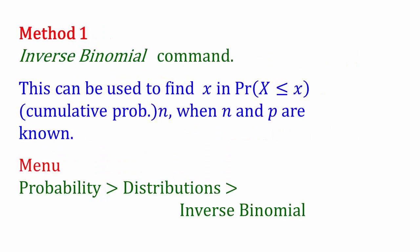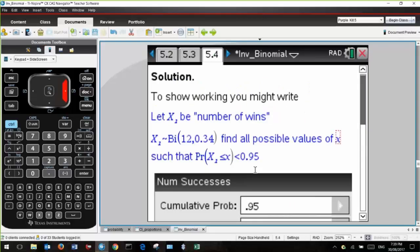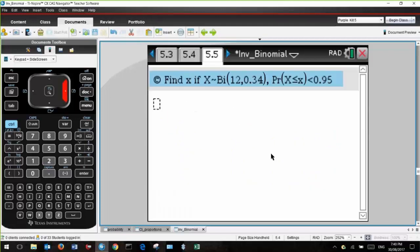We're going to use the inverse binomial command. This time it's not inverse binomial N, it's just inverse binomial, and this can be used under those circumstances. For your working, make sure that you show that it's binomial with N equal to 12 and P equal to 0.34, and we want to find possible values of X for that equation to be true.